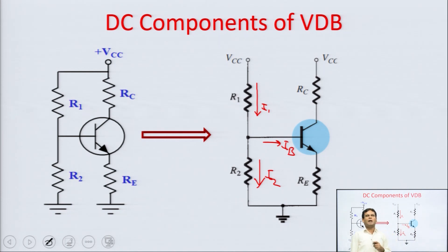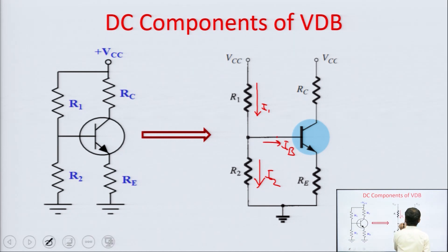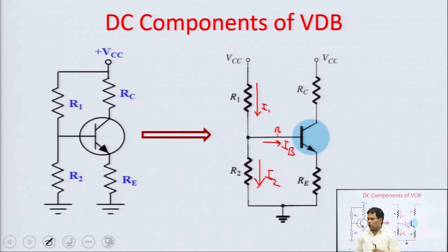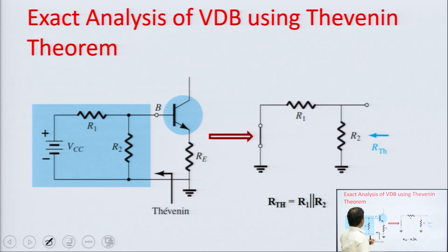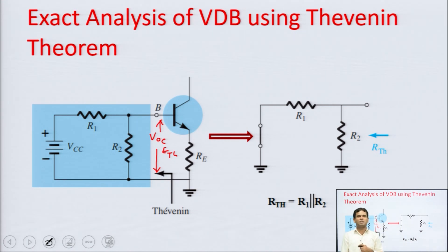First of all I am going to discuss the Thevenin analysis. To apply Thevenin's theorem we first assume the load terminal, which is basically between base and emitter. We will then attach the two parameters: the Thevenin equivalent resistance RTH and the Thevenin voltage ETH.